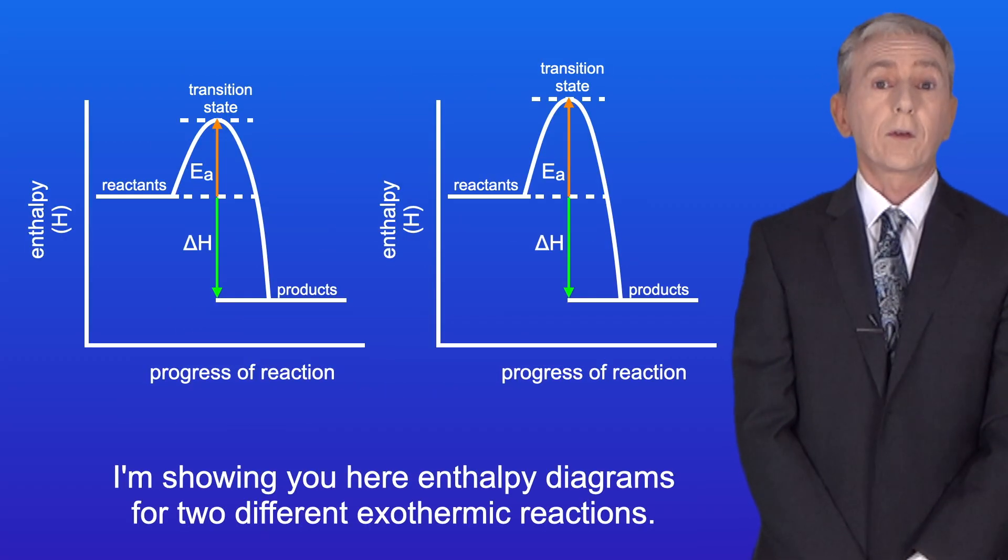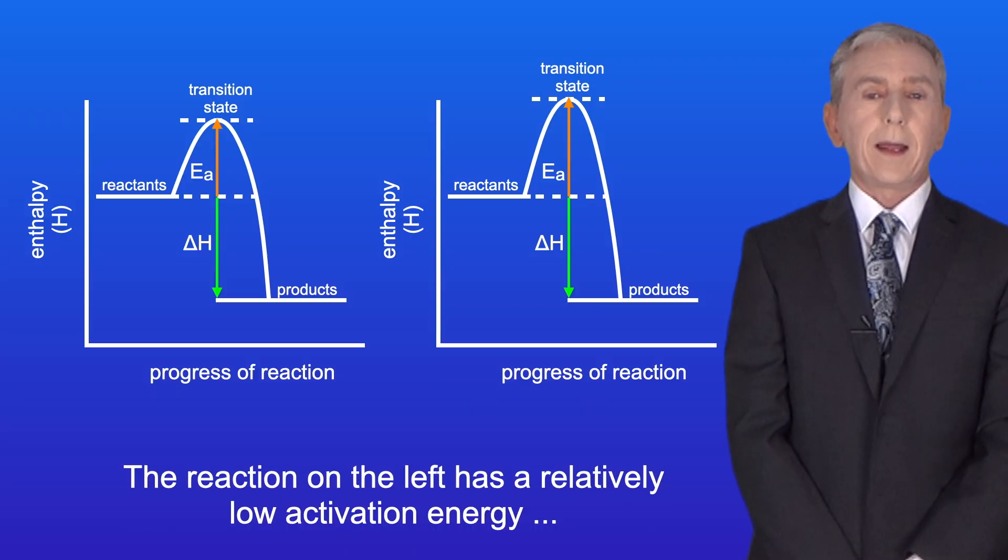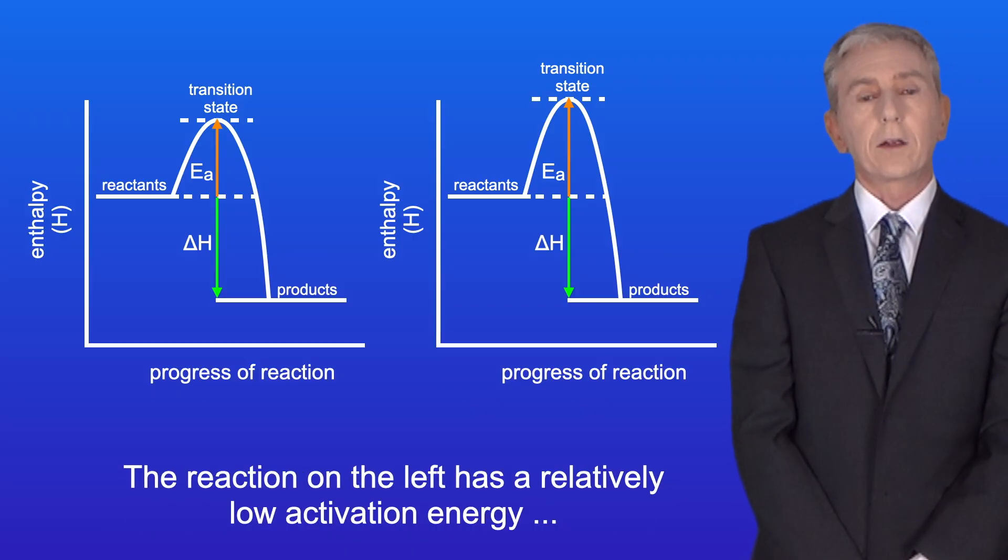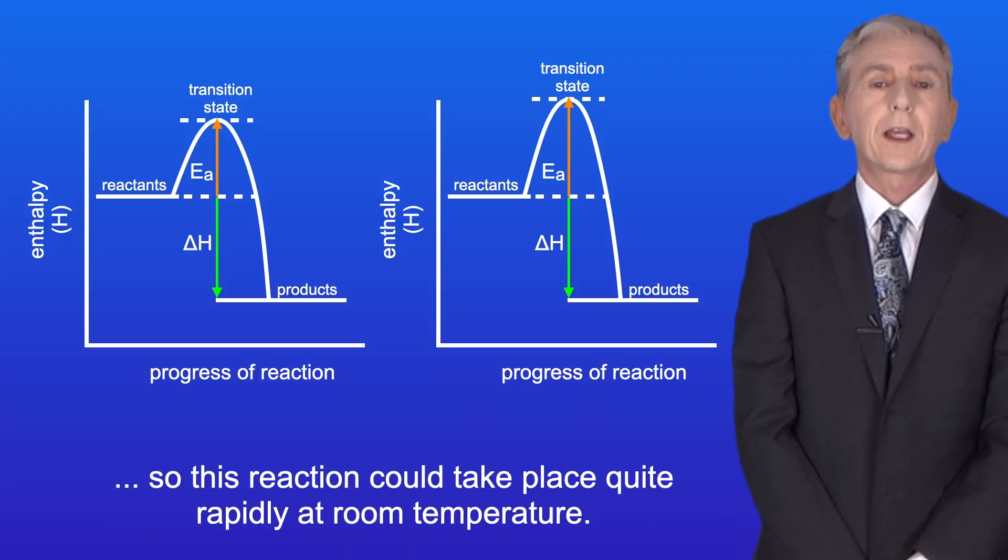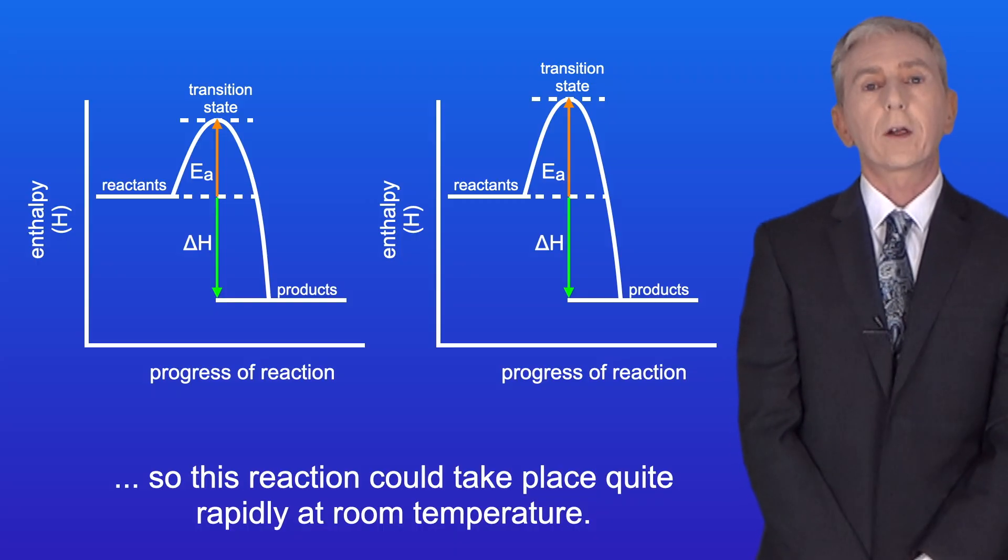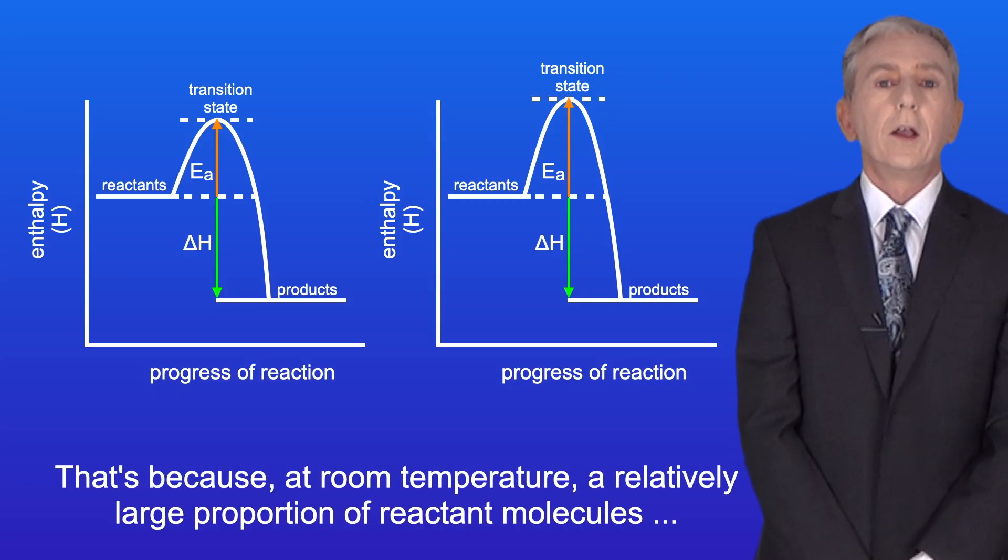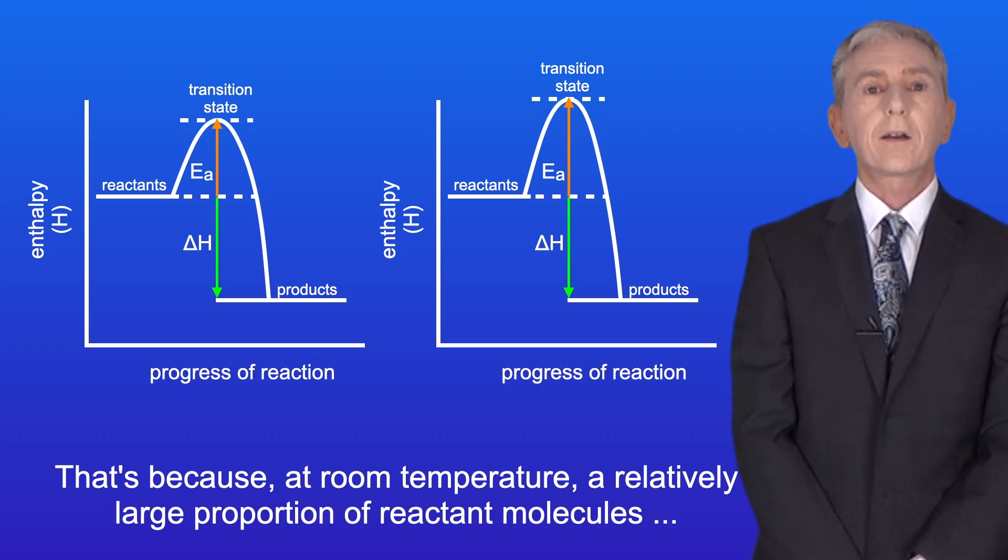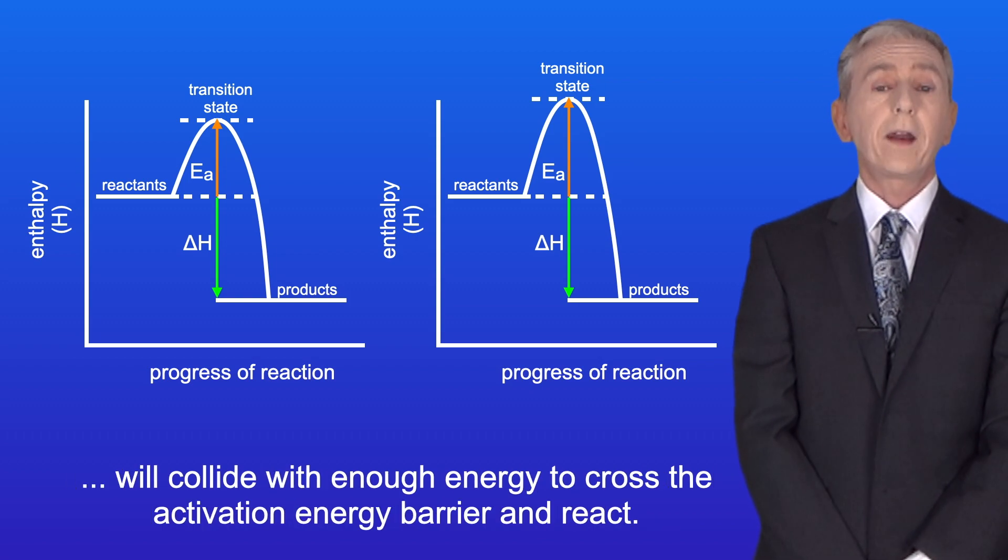I'm showing you here enthalpy diagrams for two different exothermic reactions. The reaction on the left has a relatively low activation energy, so this reaction could take place quite rapidly at room temperature. That's because at room temperature, a relatively large proportion of reactant molecules will collide with enough energy to cross the activation energy barrier and react.